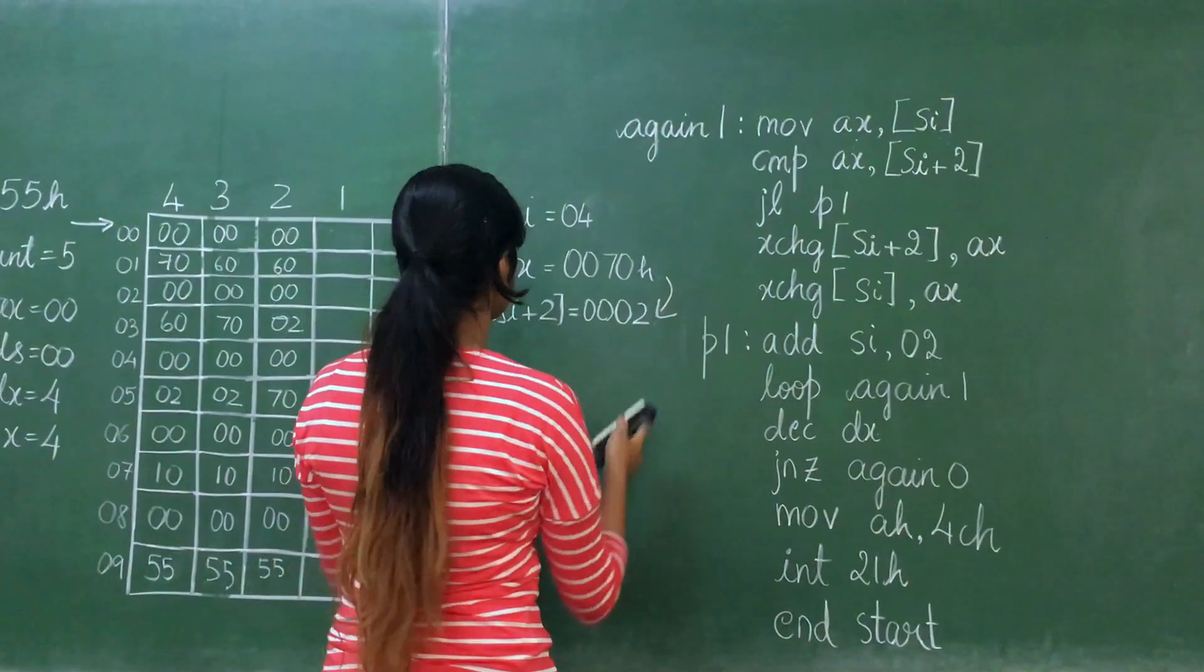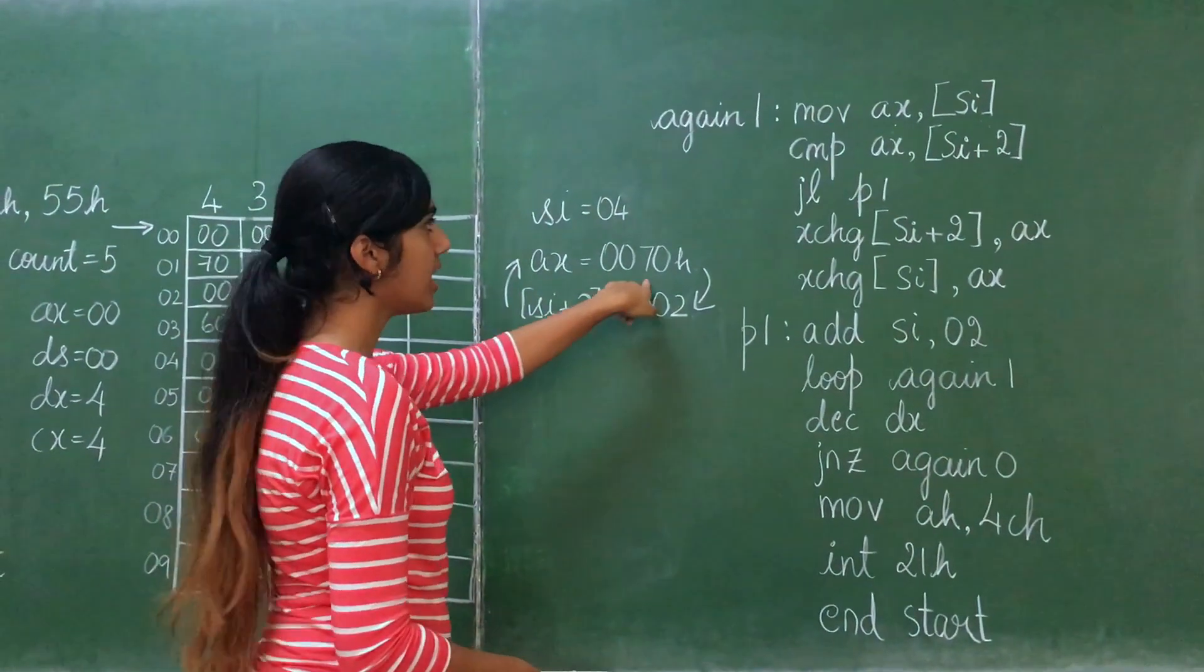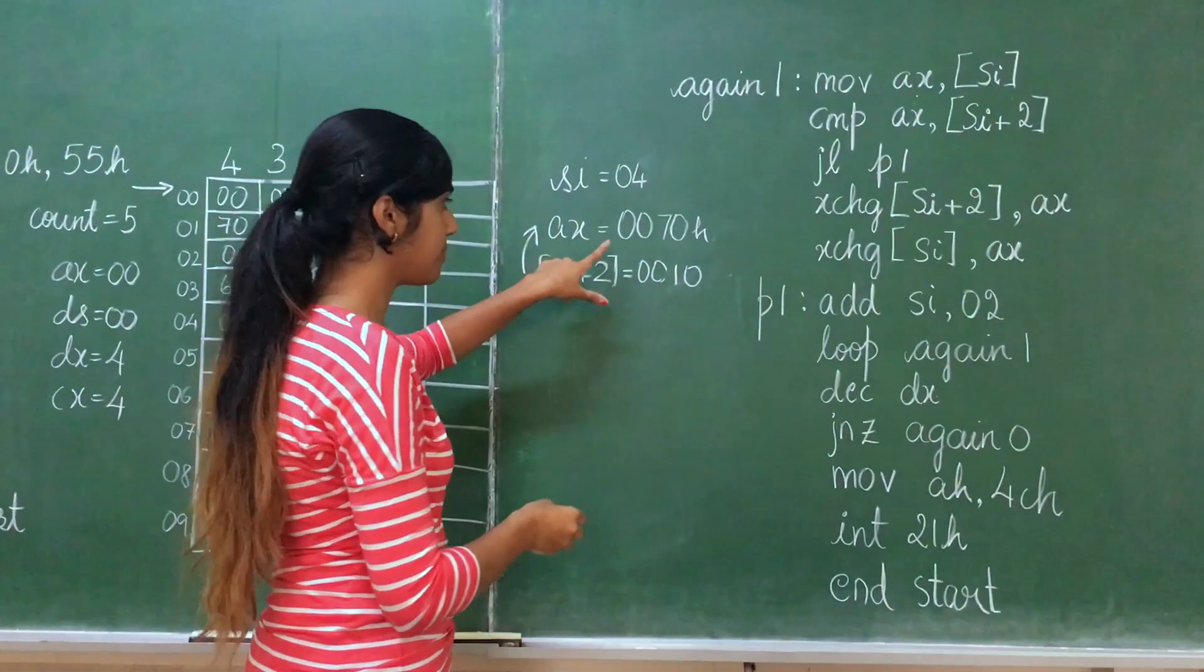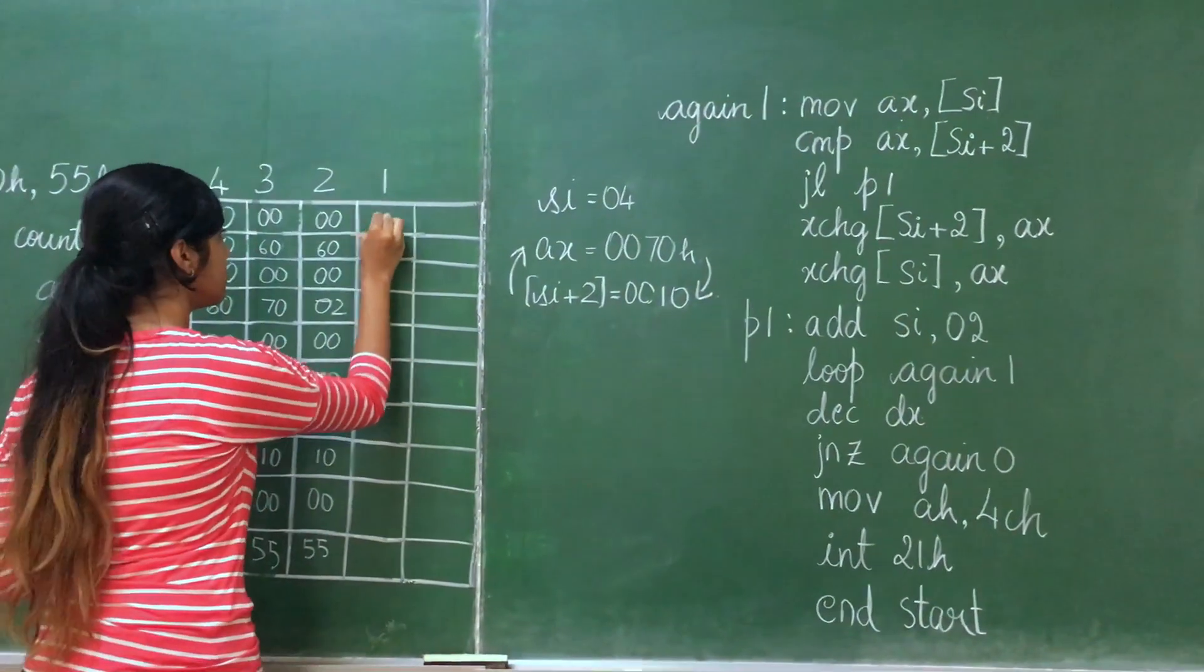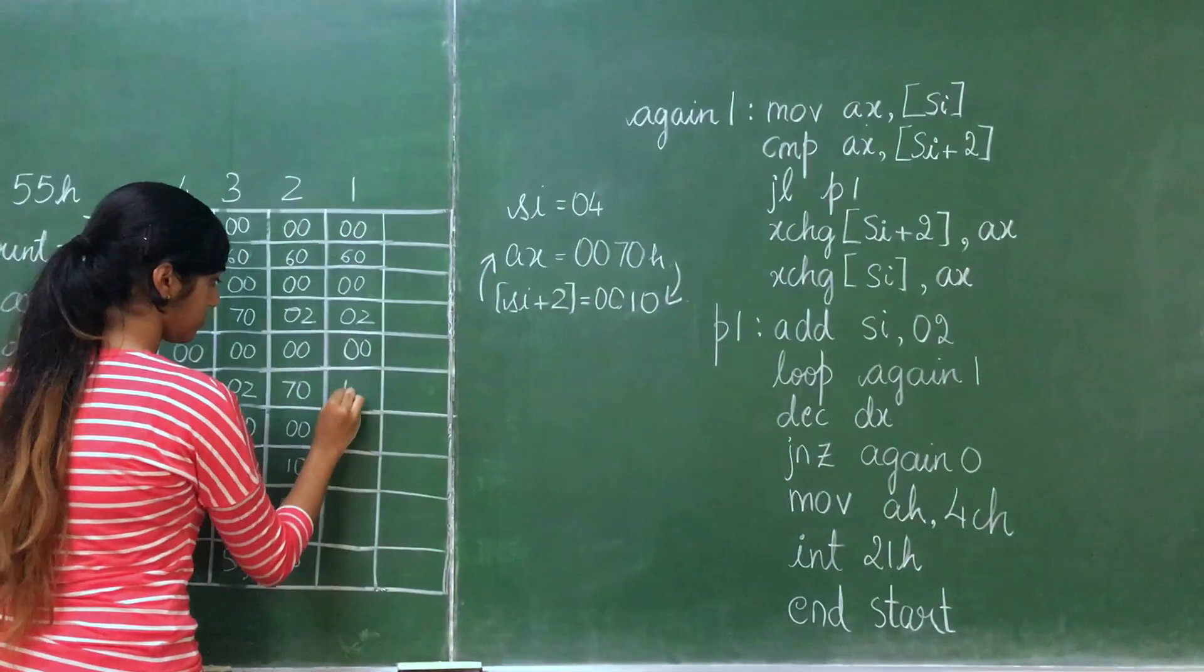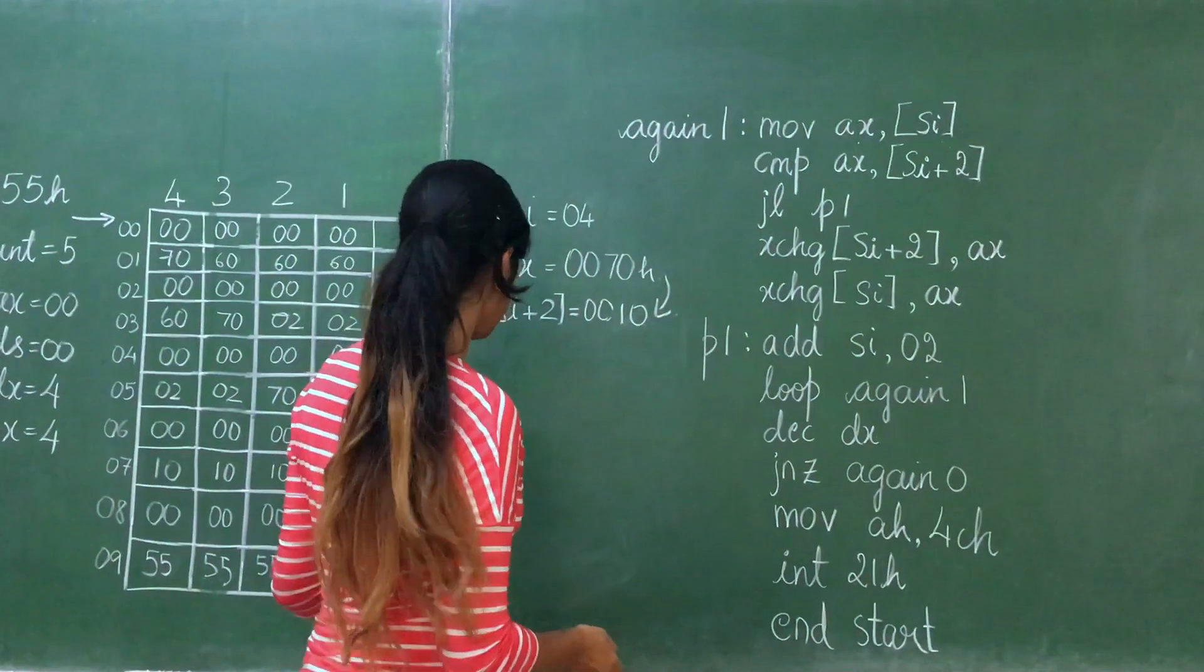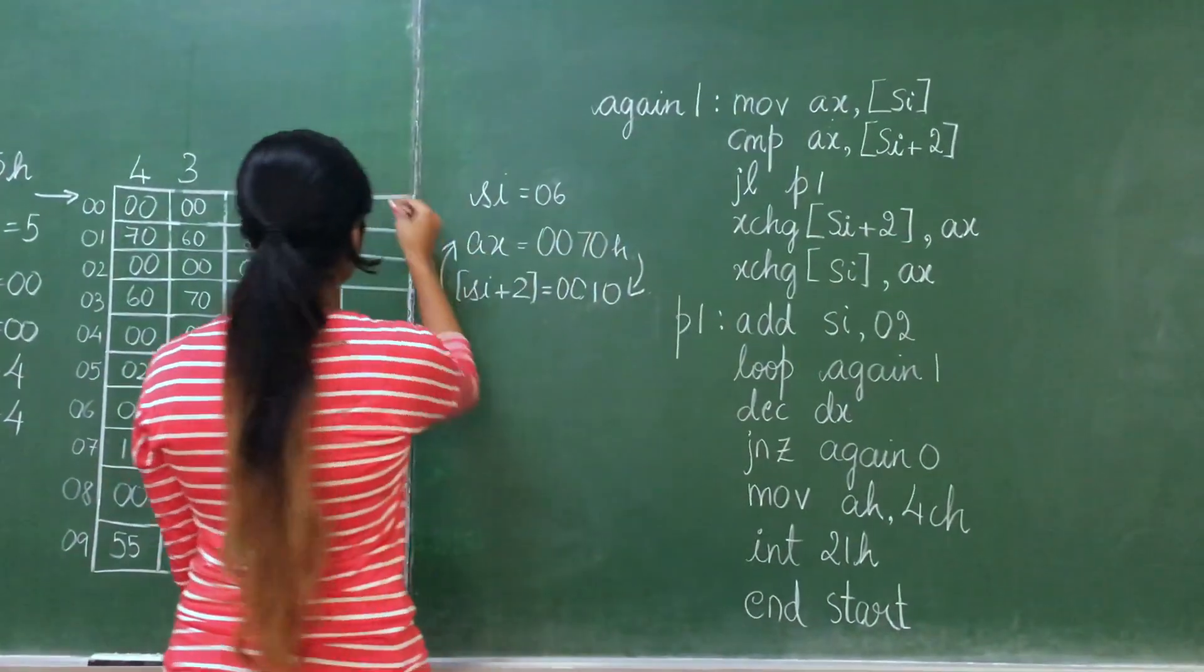We move AX from SI. In 04 it is 0070, so AX will be the same, and we compare it with SI plus 2. SI plus 2 is 0010. We compare with respect to AX: 0070 is greater than 0010, so we swap the values. After swapping, SI is incremented by 2, so SI will be 06. Then we loop to Again1, and count goes to 0.